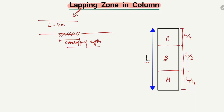Only in the B region is overlapping of the bar allowed. The A region is known as the tension region — I will explain later what is meant by tension region — while B is the overlapping zone or region. We can overlap our steel bars only in the B region, meaning only at a length of L/2 in the middle of the column.